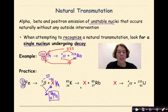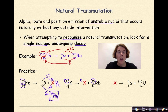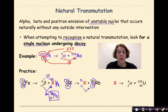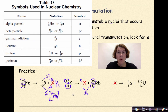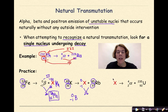Next: potassium-85 undergoes some type of decay to form rubidium-85. What is the emitted particle? The mass number is 85 on both sides, so the particle's mass number must be 0. The atomic number of potassium is 36 and rubidium is 37, so the particle must have a charge of −1, because 37 minus 1 equals 36. The particle with mass number 0 and charge −1 is a beta particle.